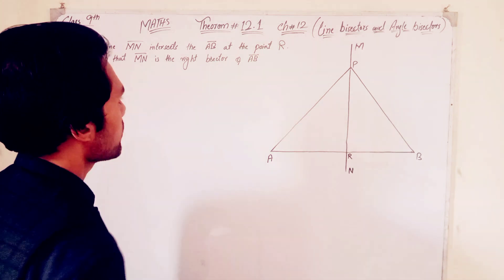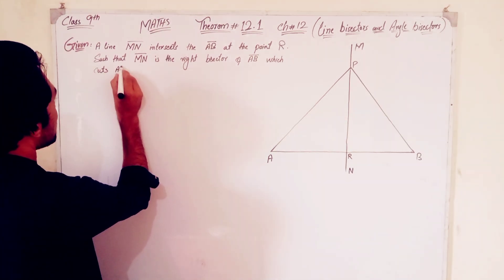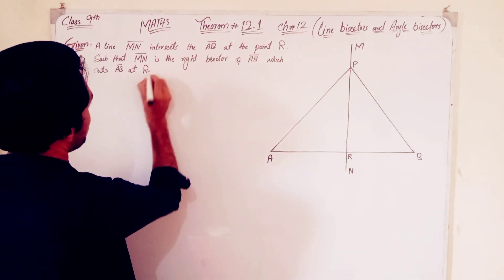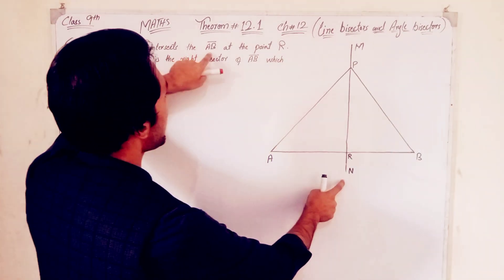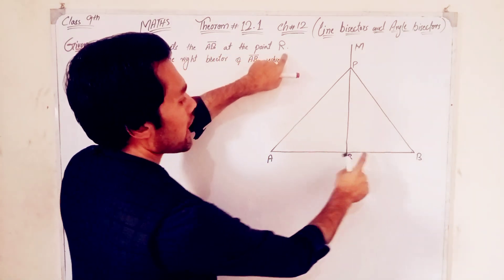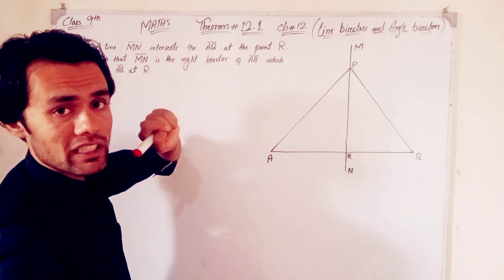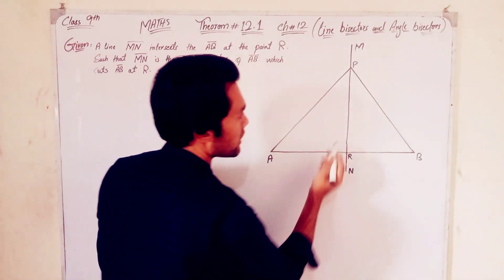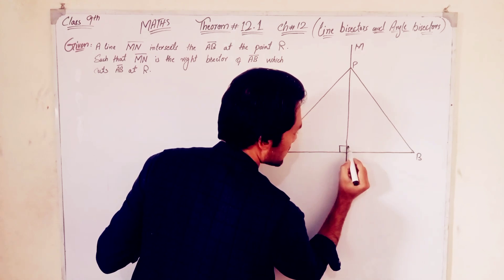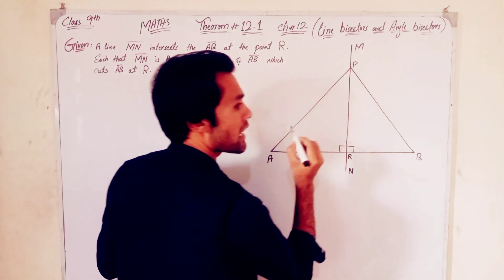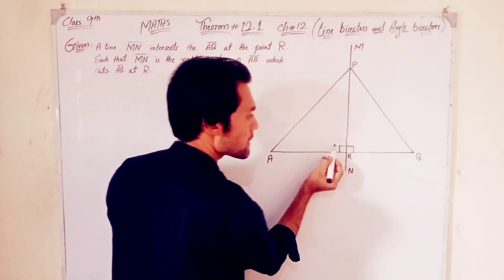MN is the right bisector of AB, which cuts AB at point R. This is a right bisector. The right angle is 90 degrees — 90 degrees and 90 degrees. So the right bisector is at 90 degrees.